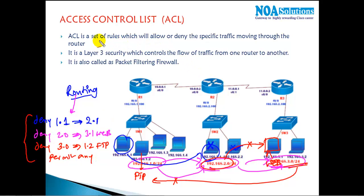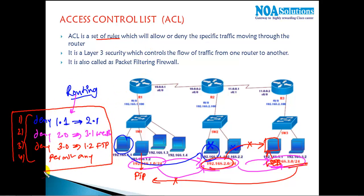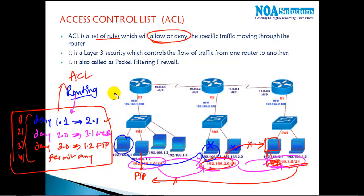These are a set of rules — rule one, second rule, third rule, fourth rule — and all these rules combined are referred to as an access control list. ACL is a set of rules that will allow or deny specific traffic. If I say deny it will deny; if I say permit it will permit.